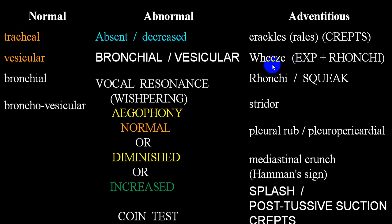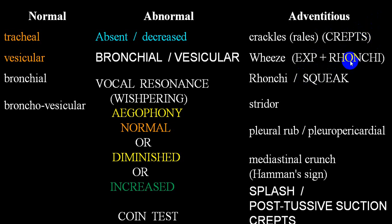A dry sound produced by secretions in the tracheobronchial tree is called ronchi — mainly expiratory sounds. These are very classical in COPD, chronic bronchitis, emphysema, bronchial asthma, and acute and chronic bronchitis. In obstructive lung disease, because of narrowing of the tracheobronchial lumen, expiration is prolonged — longer than inspiration. Normally expiration is shorter, but in obstructive disease expiration is longer. During that prolonged expiration, dry sounds are produced due to secretions, and these are called ronchi.